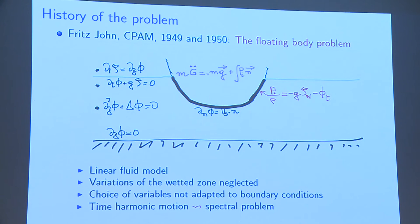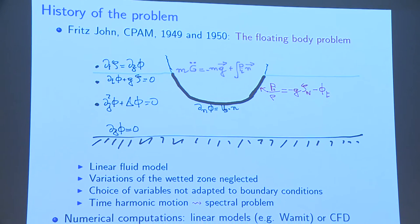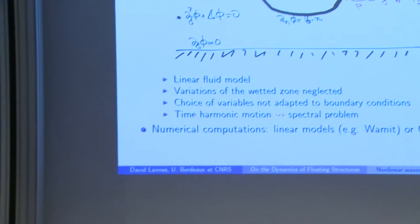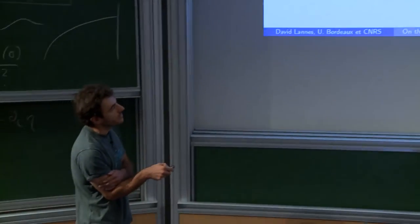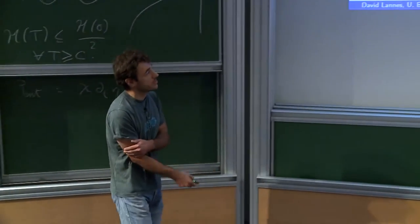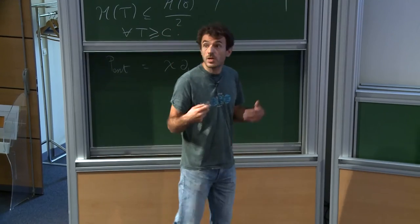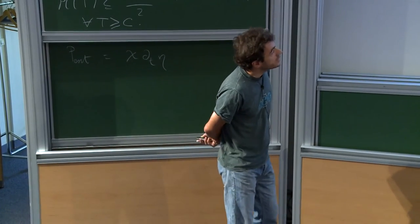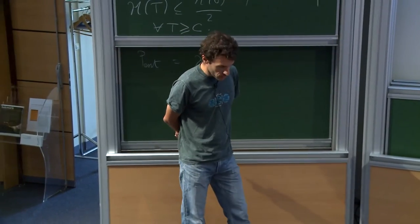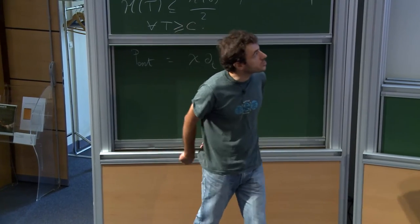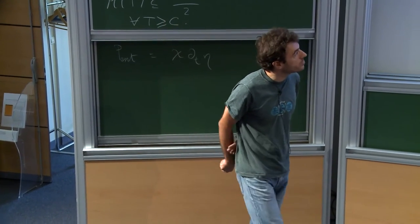This is a very simplified problem, and actually this is the only thing used by engineers now — software like WAMIT uses these linear models. Of course you cannot use this software to understand nonlinear effects, in particular the nonlinear effect I mentioned about the mooring systems.